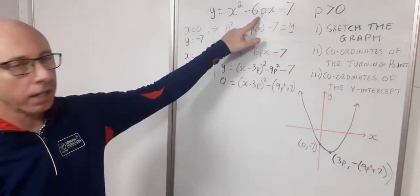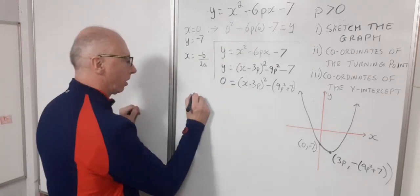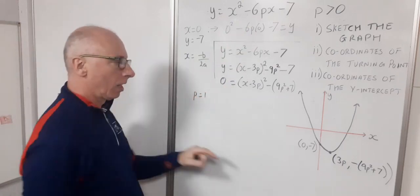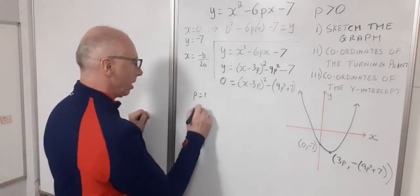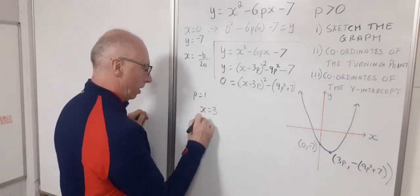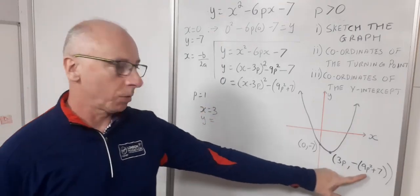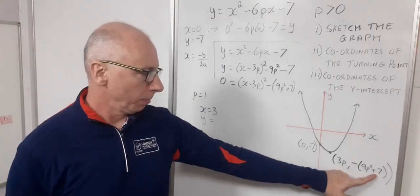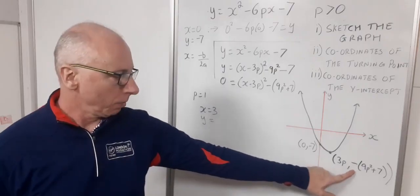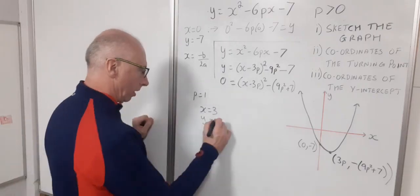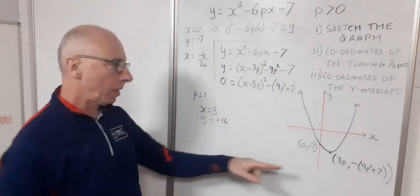So for example, in this case here, if p equals 1, I've got my x is 3. And my y-coordinate will be 9 times 1 squared, which is 9, plus 7 is 16. And with this minus, minus 16. So that would be my coordinate there.